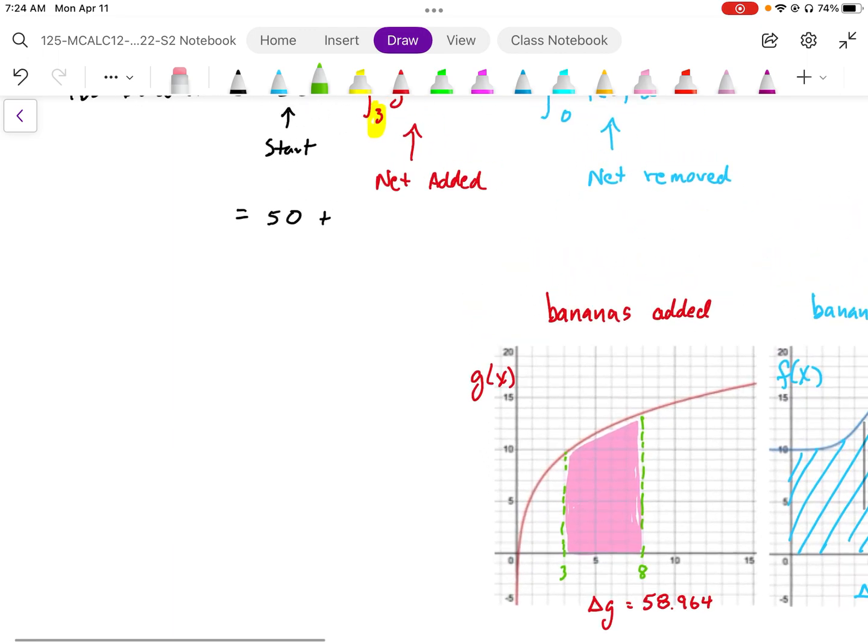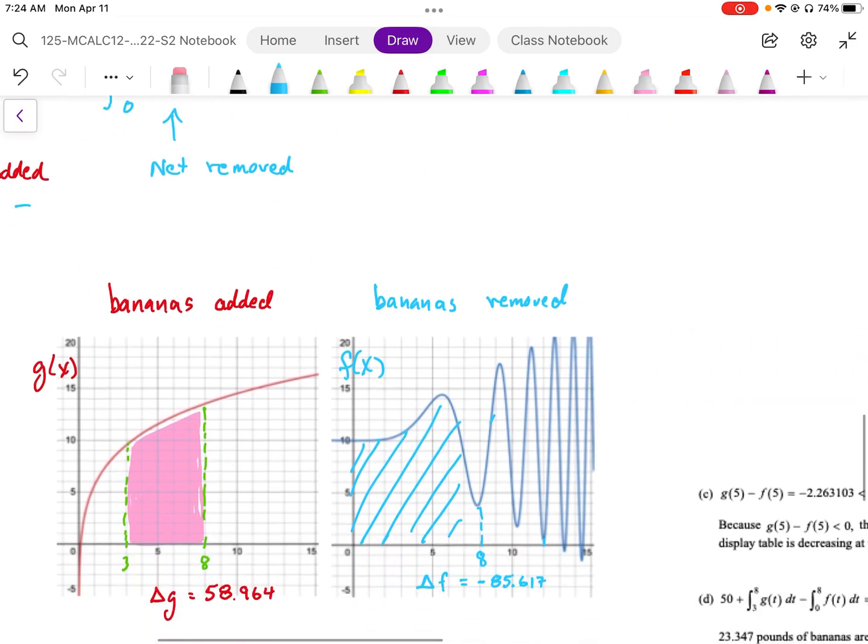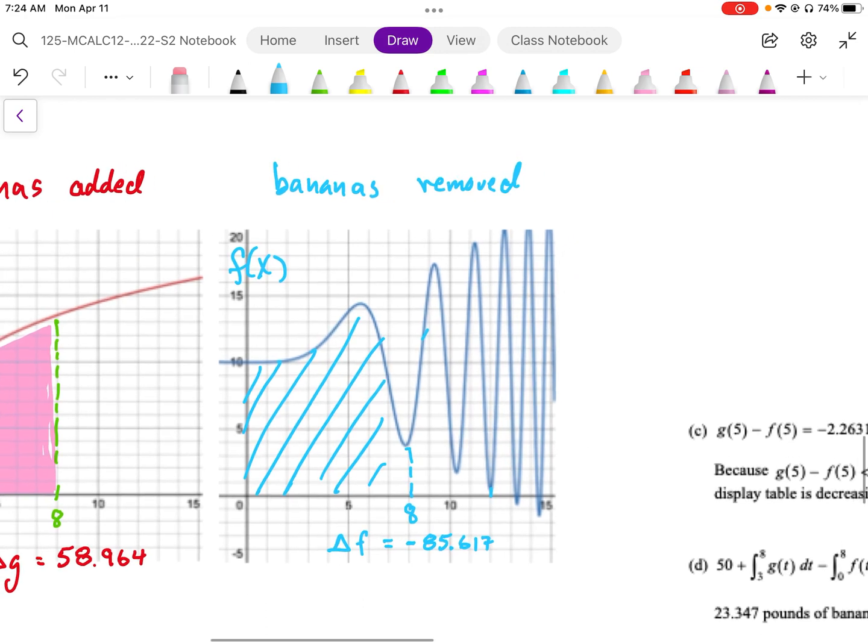So in our calculation, we end up with plus 58.964, and then we're going to take away based on the f function. When we sketch this f function out on our graphing calculator, we should see something similar to this.